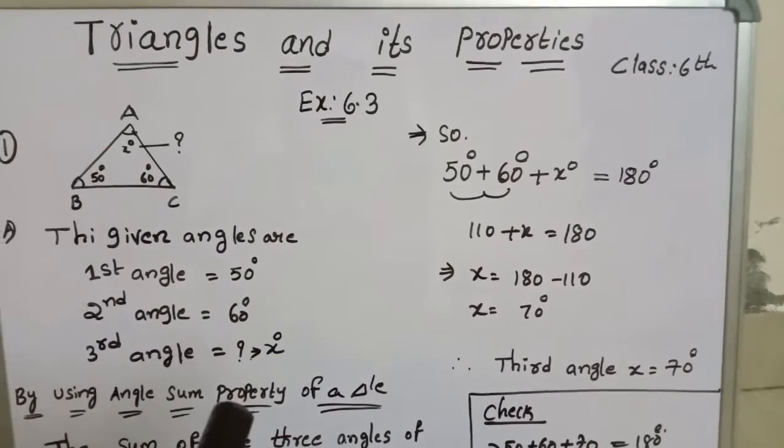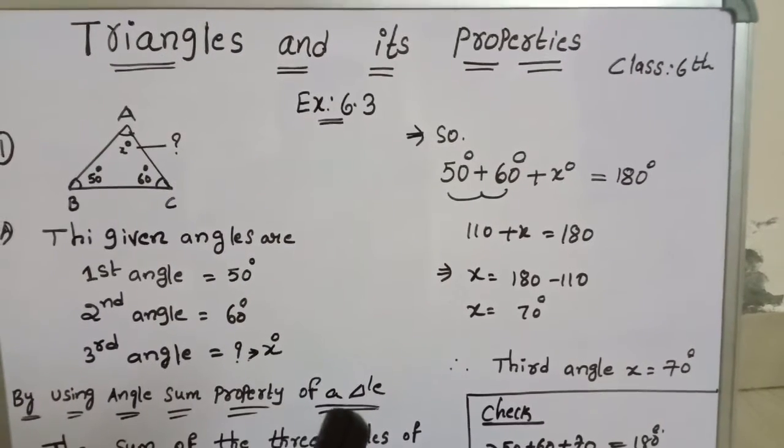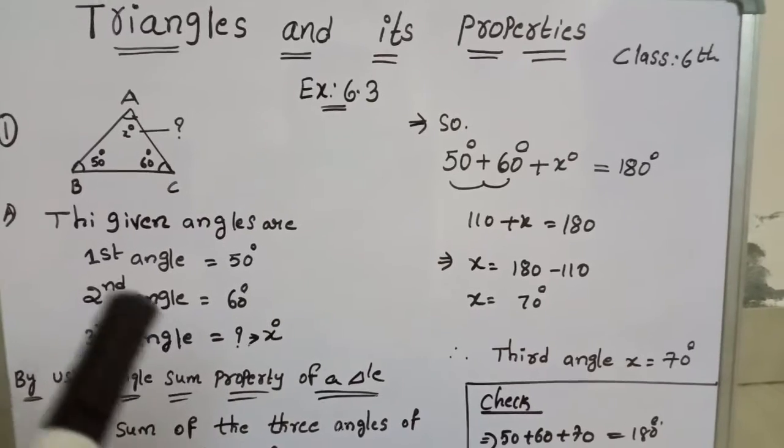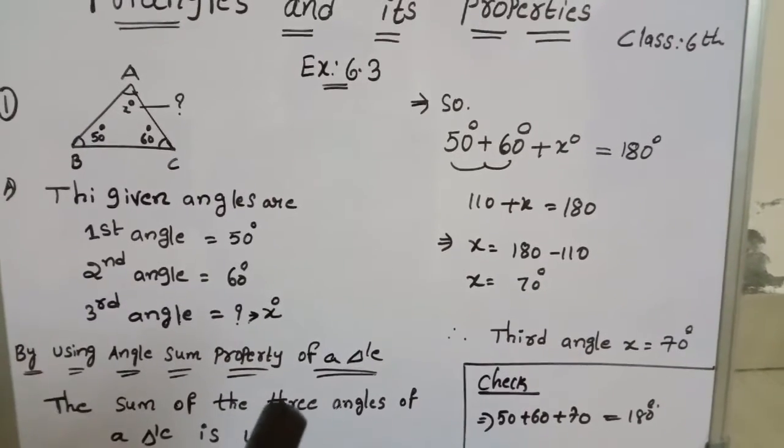For that we should use angle sum property of a triangle. What does it mean? The sum of the 3 angles of a triangle always should be 180 degrees.